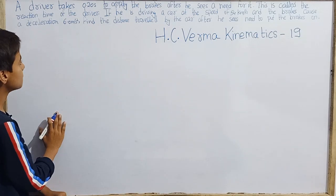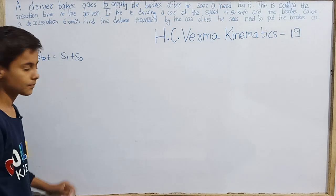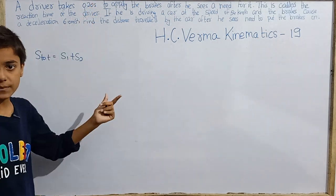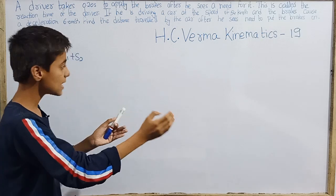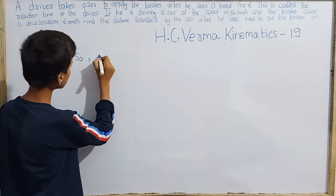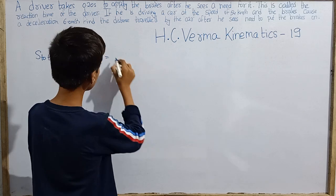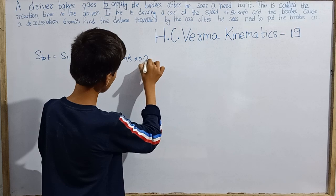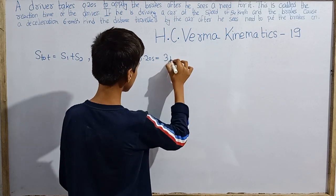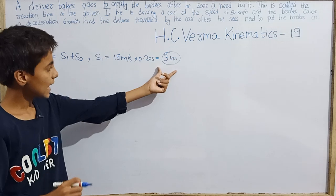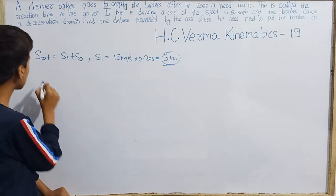S1 is the distance traveled during the reaction time. During the reaction time of 0.20 seconds, there is constant speed and no acceleration, so distance equals speed times time. Converting 54 km/h gives 15 m/s, so S1 = 15 × 0.20 = 3.0 meters. During the reaction time, the car travels 3 meters.